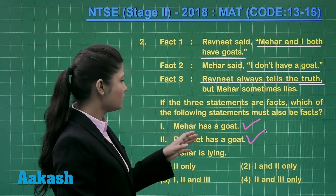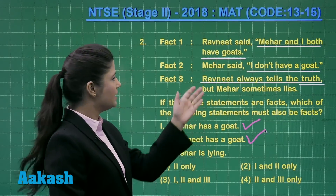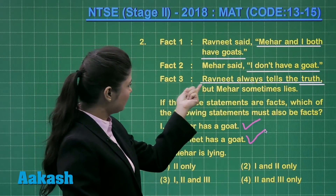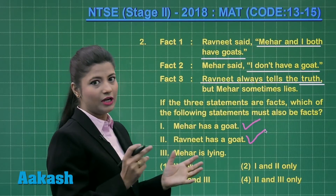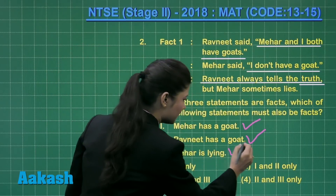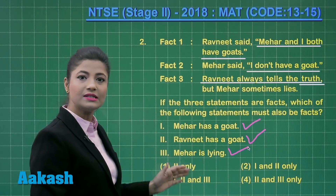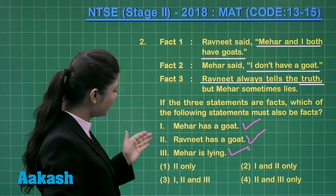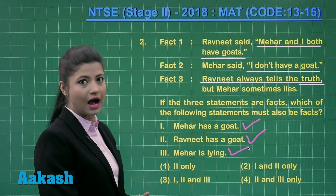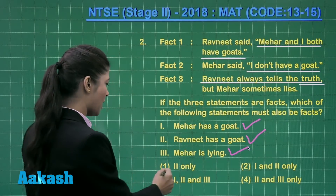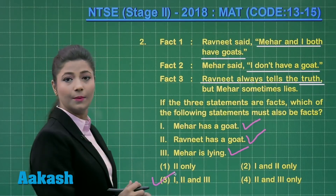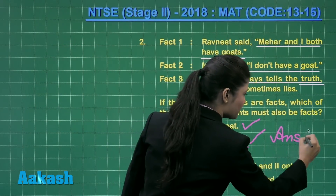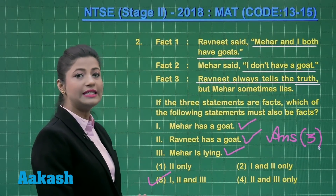Since Ravneet tells the truth and both Meher and Ravneet have goats, the second fact — where Meher said 'I don't have a goat' — is a lie. The third fact states Meher sometimes lies, so it is possible she is lying here. Considering all three facts, the first, second, and third following statements are all facts. Therefore, the correct answer for this question is option number 3.